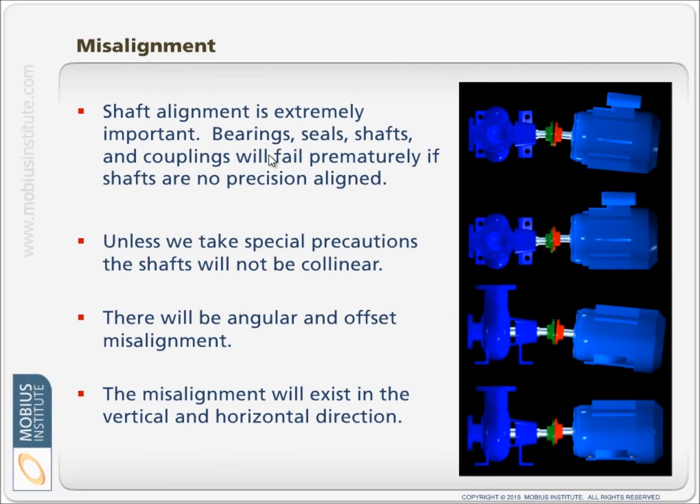Shaft alignment is extremely important. Bearings, seals, shafts, and couplings will fail prematurely if shafts are not precision aligned. Unless we take special precautions, the shafts will not be collinear. There will be angular and offset misalignments, and that misalignment will exist in the vertical and horizontal direction.